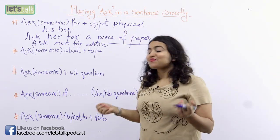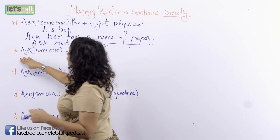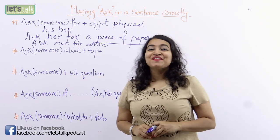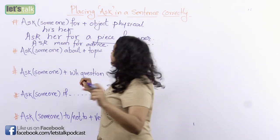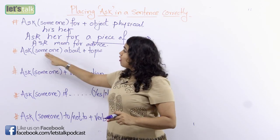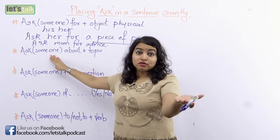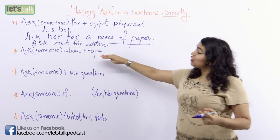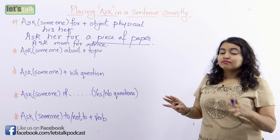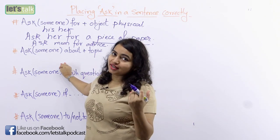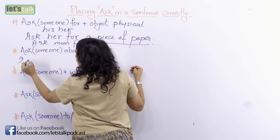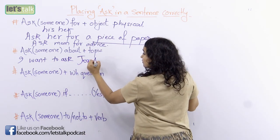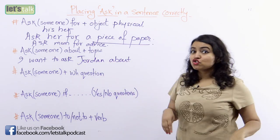The second way to use this word is when you want to talk about something. We like to have conversations and gossip. So the second way is: use 'ask', followed by someone — a name, 'his', 'her', 'your' — followed by the word 'about', and then any topic. For example: 'I want to ask Jordan about his trip to Europe.'